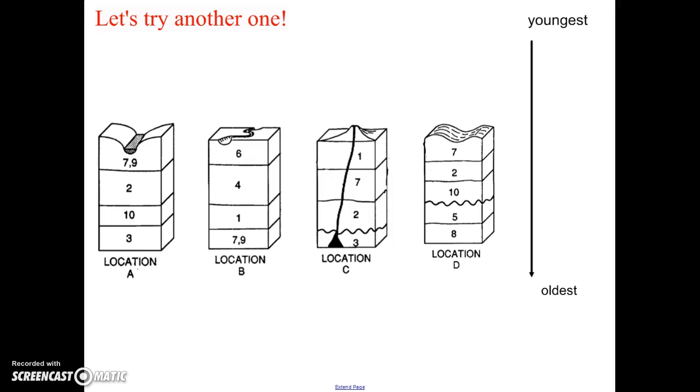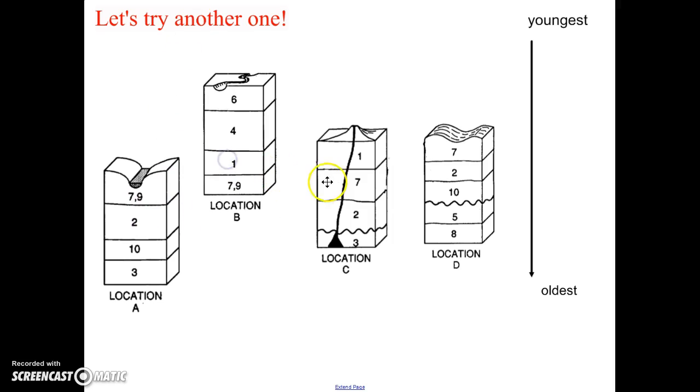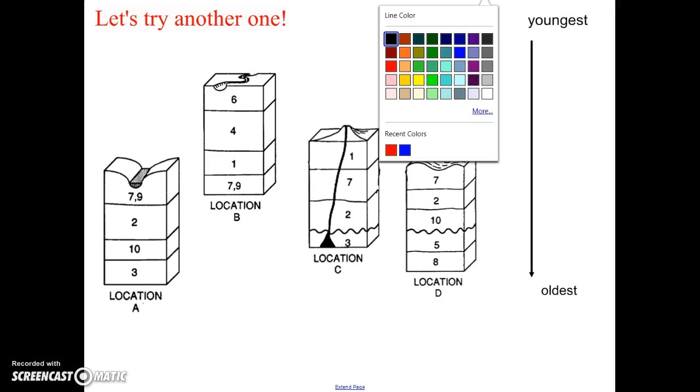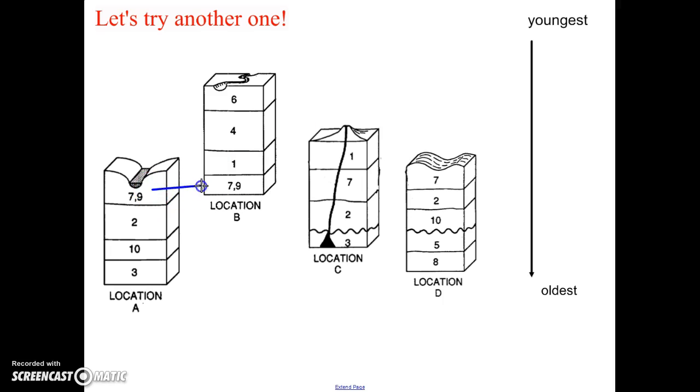Let's do one more together. We have four different outcrops here. Location A, B, C, and D. And what we want to do is we want to list the layers in order from youngest to oldest. So again, we're going to start by finding the number that appears in most of the columns. So what number do you see in all the columns? Hopefully you notice that there's a seven in each column. So I'm going to line these up so that all the sevens are near each other. Unfortunately, you can't do this when you have a piece of paper, but you could draw lines like I did on the last one. So these sevens all correlate. They're all the same age. So I see rocks that are younger than the seven and I see rocks that are older. So the seven is going to be somewhere towards the middle.